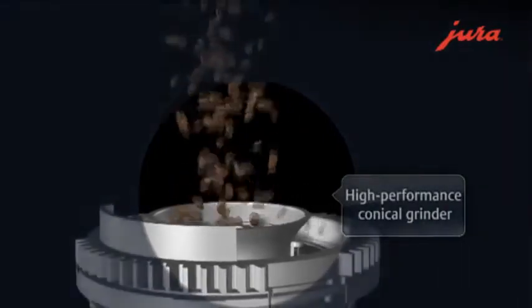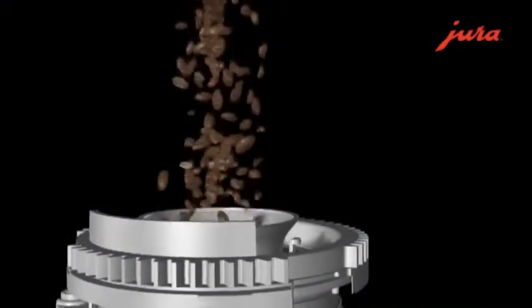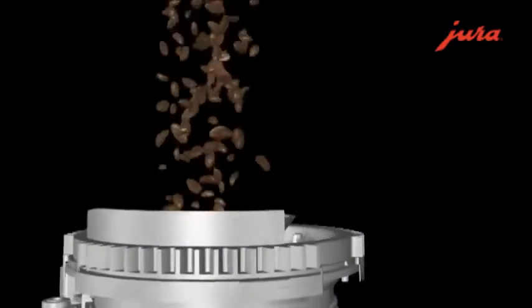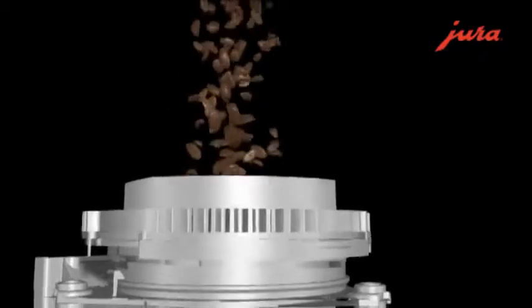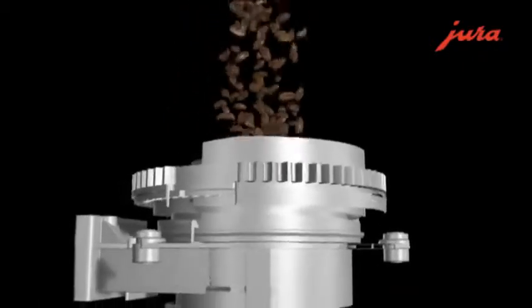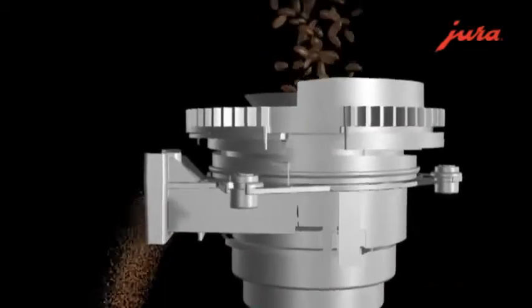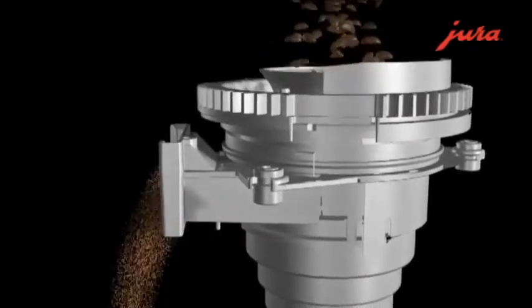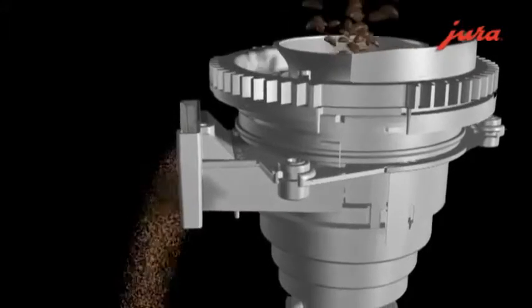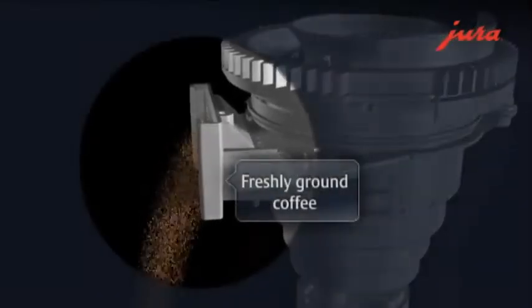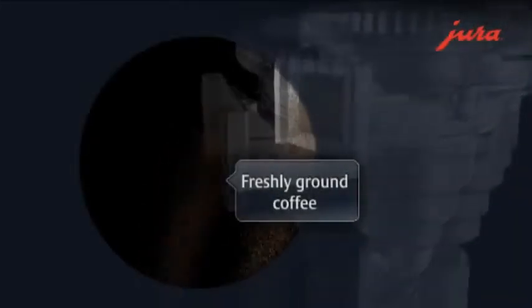You can adjust the grinder setting to select the fineness of the coffee powder you want. This affects the flow-through time of the water, the so-called extraction time. The finer the powder, the more intensive the flavor. For dark roasted beans, Jura generally recommends a coarser grind.